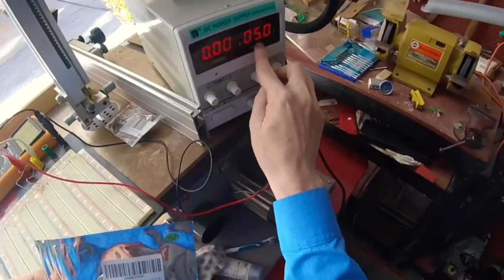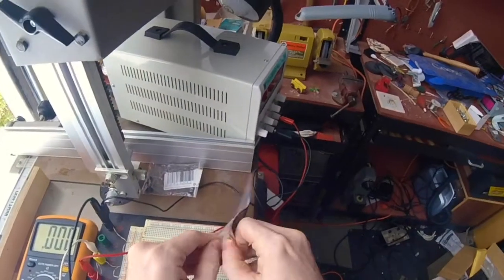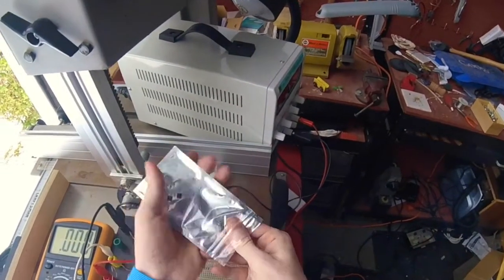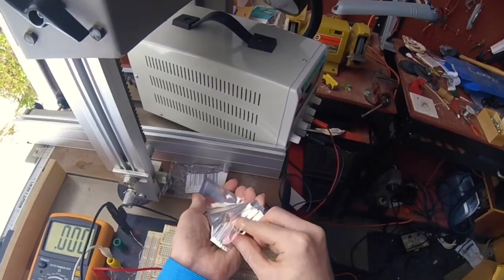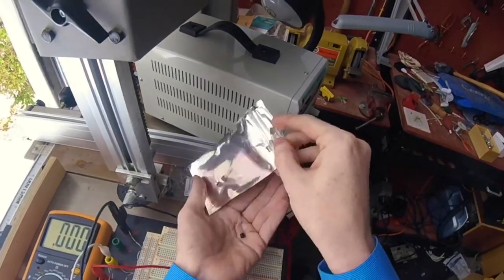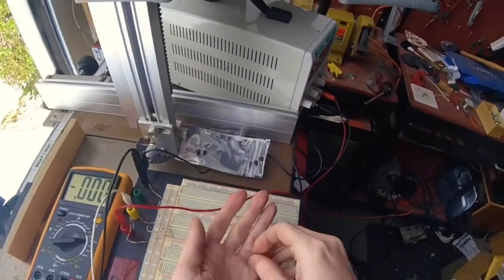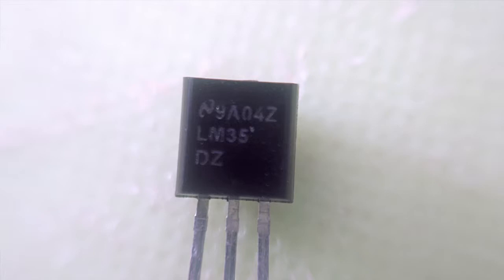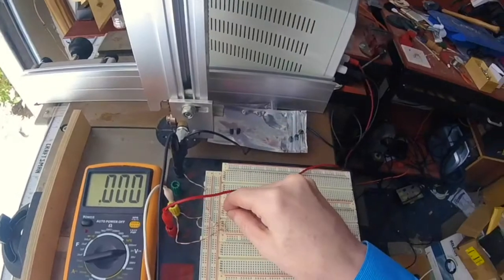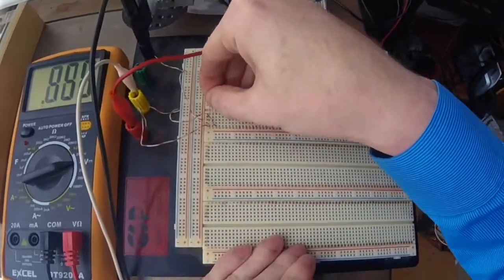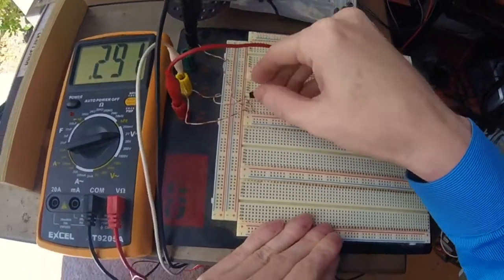We've got 5 volts from the power supply. Take one of these out. Spread the legs a little bit and plug it in here. There we go.